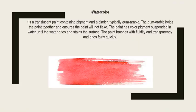Watercolor is a translucent paint containing pigment and a binder, typically gum arabic. The gum arabic holds the paint together and ensures the paint will not flake. The paint has color pigment suspended in water until the water dries and stains the surface. The paint brushes with fluidity and transparency and dries fairly quickly. Watercolor is always called the paint for beginners, as it comes in cake forms on a palette and is pretty easy to use.